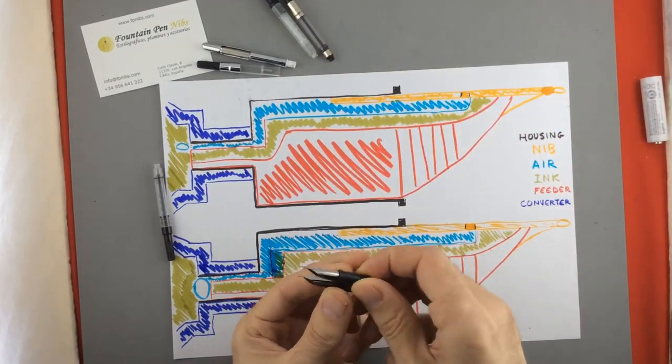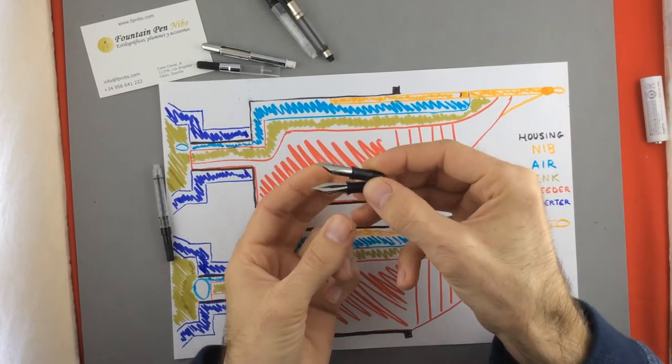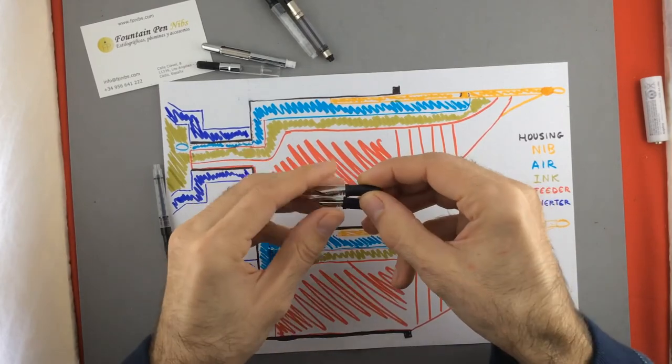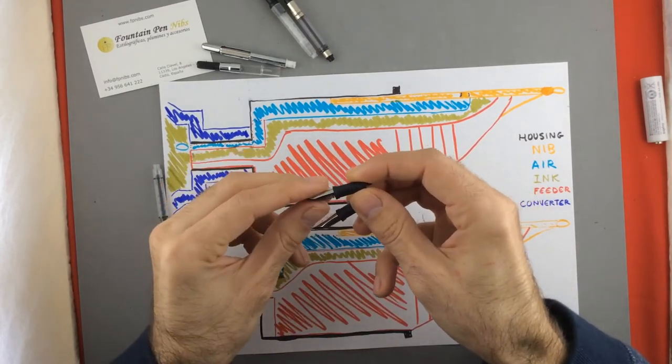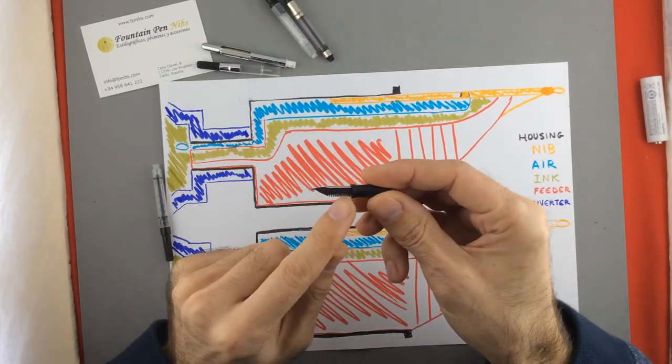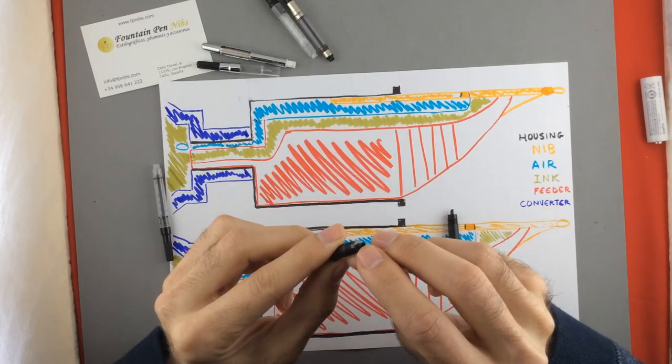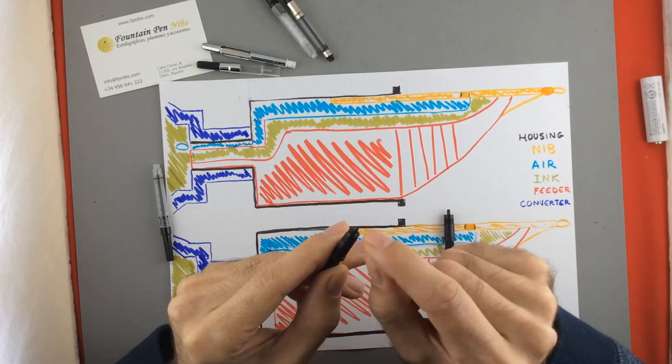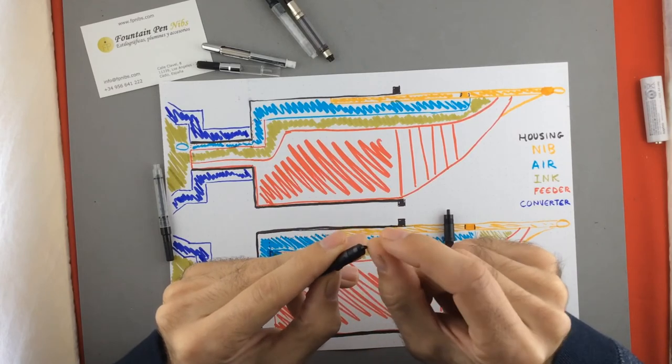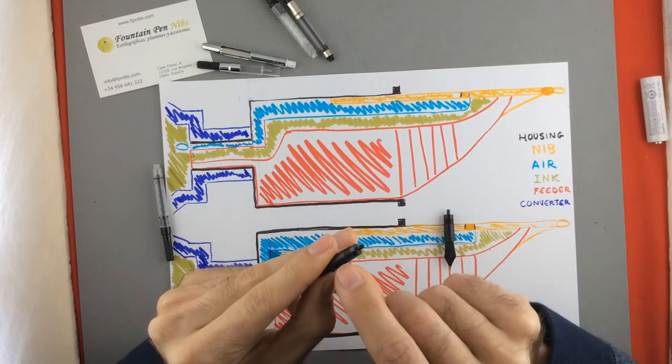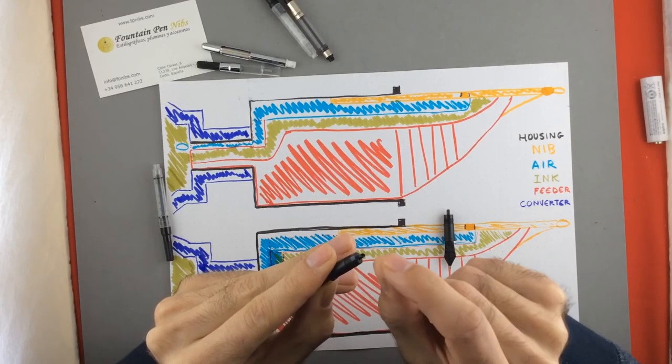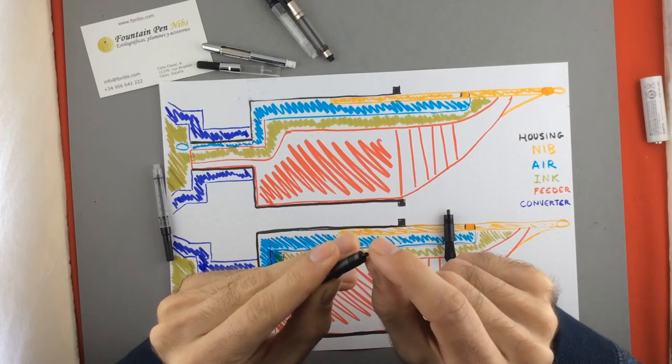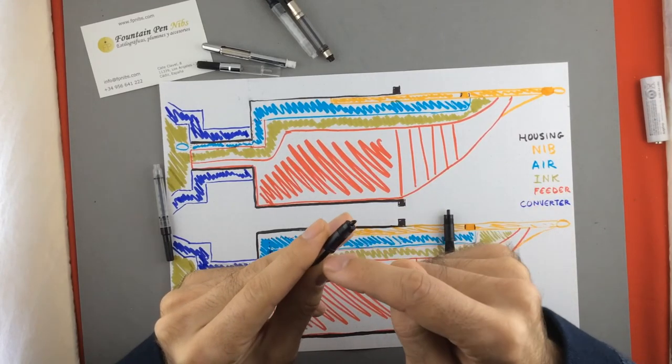In these two nib units you can see they are the same but not. This one the feeder is a little bit outside and the rod, the connection rod that's in the feeder with the reservoir is not all the way in. So a very little air bubble can cause the ink doesn't come into the feeder.